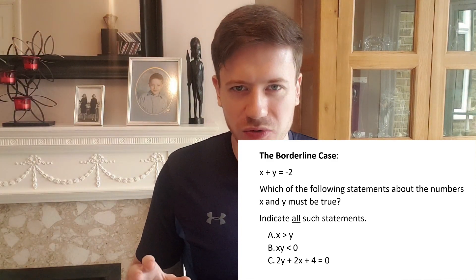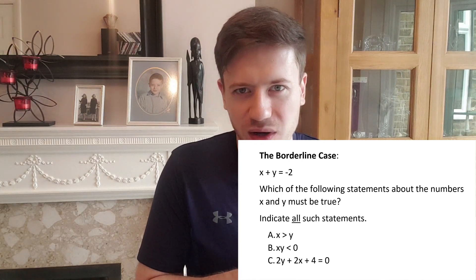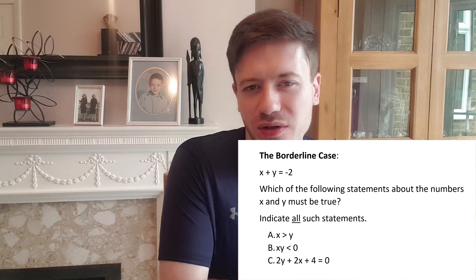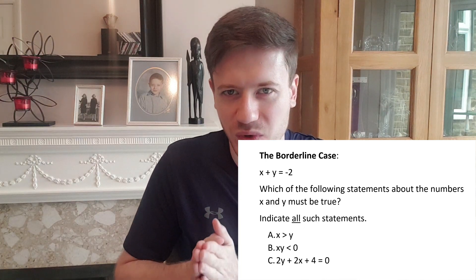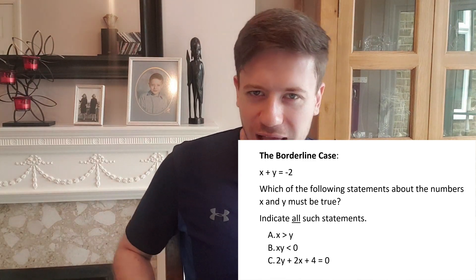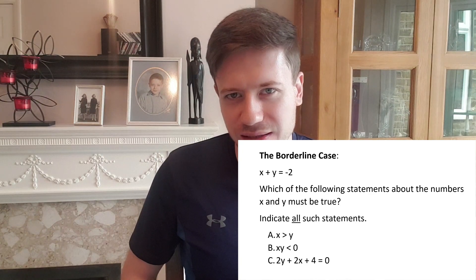Now instead of that logical approach we could have picked numbers. For example if x plus y equal minus 2 then it could be that x equals minus 1 and y equals minus 1 as well. That's the most obvious set of numbers to pick. You might also think of x being minus 2 and y being 0. That also makes sense.